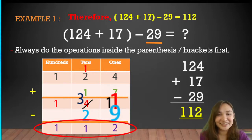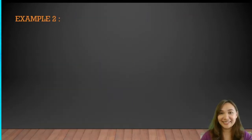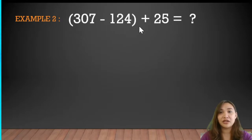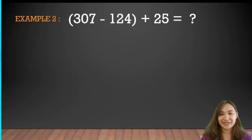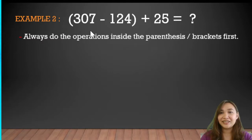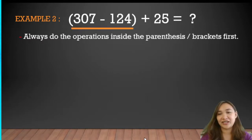Let's continue to example number two: open parenthesis 307 minus 124 close parenthesis plus 25. Let's find the answer. Always do what's inside the parenthesis first, so let's start with 307 minus 124.